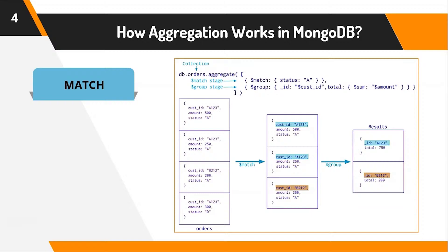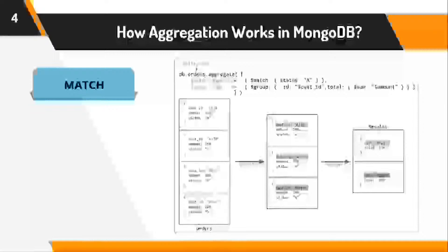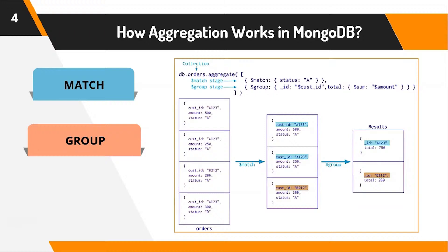Next, we want to group the values by their IDs. If you look, we have two similar IDs: A123 and B212. What group does is match all similar and related fields together and produce a result. So A123 and B212 are separated into different groups. Finally, I'm sorting and applying the sum operation, which calculates the total amount. For ID A123, the amounts are 500 and 250, so the resultant output is 750. For customer ID B212, the amount is just 200.